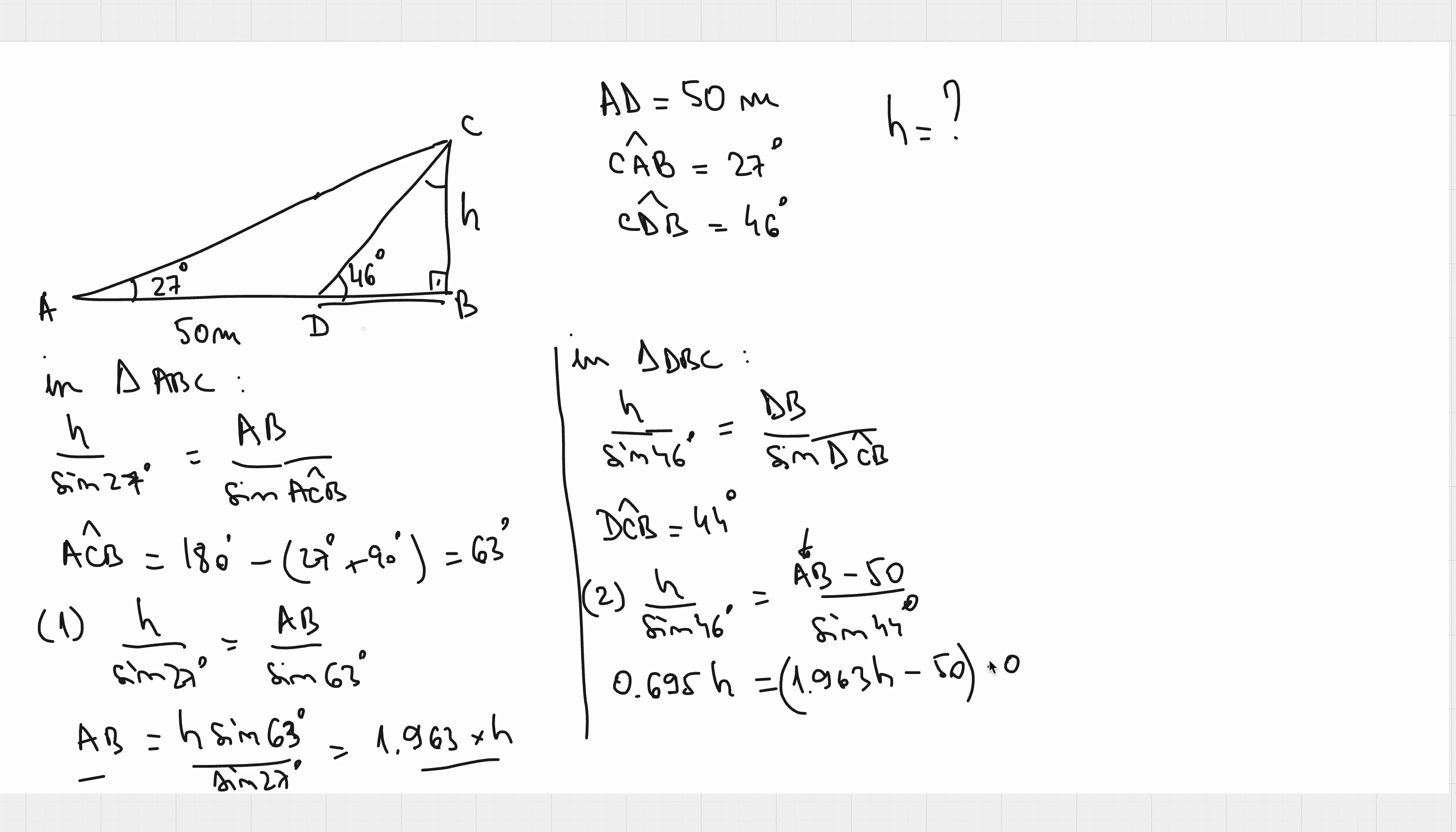which is 0.719. And if we approximate, so we can write 0.7 times H is around 2 times H minus 50, and this is times 0.7. And we'll get H around 50 meters.